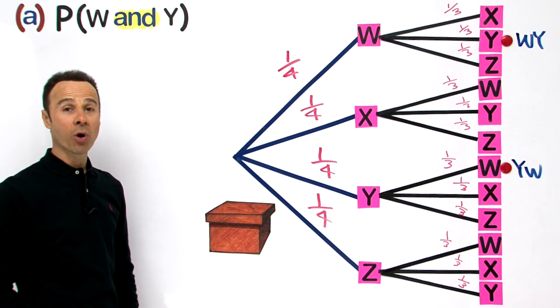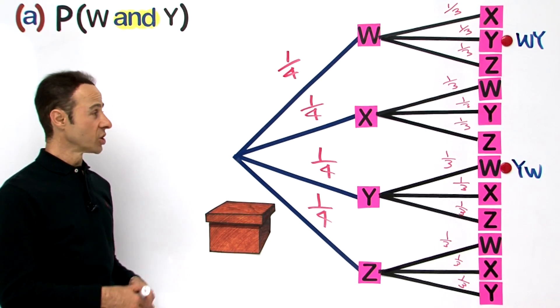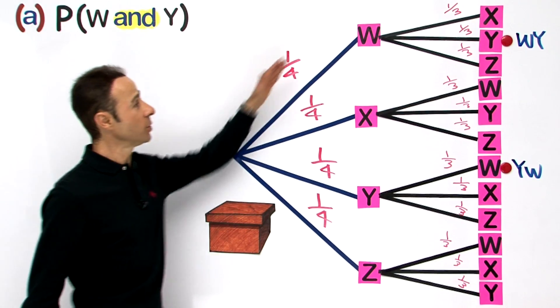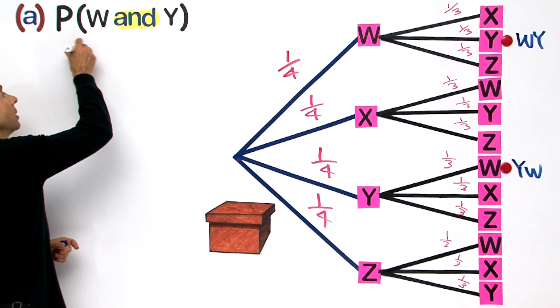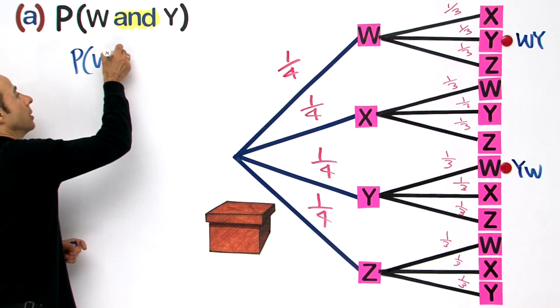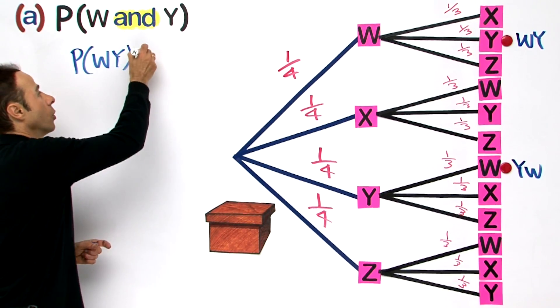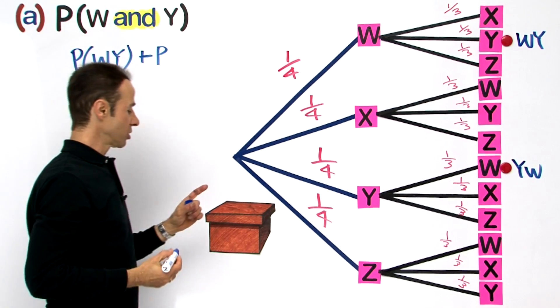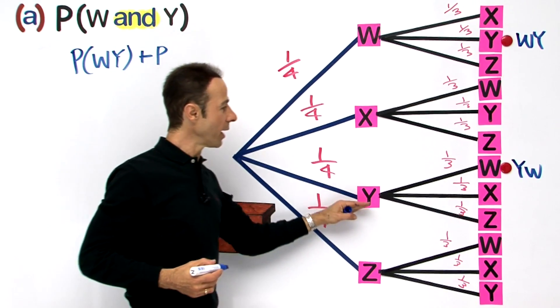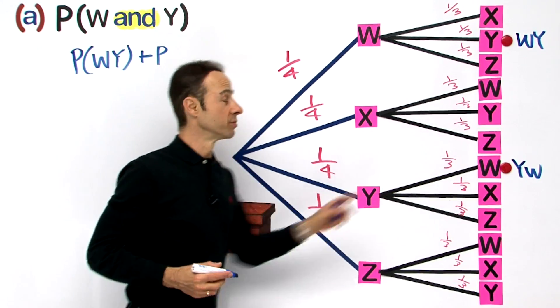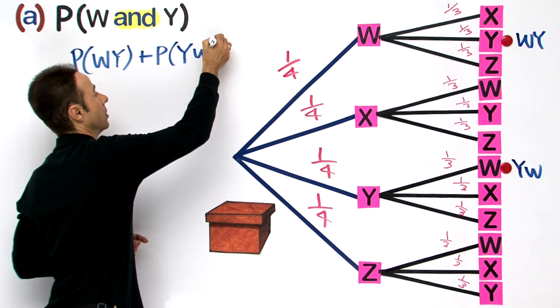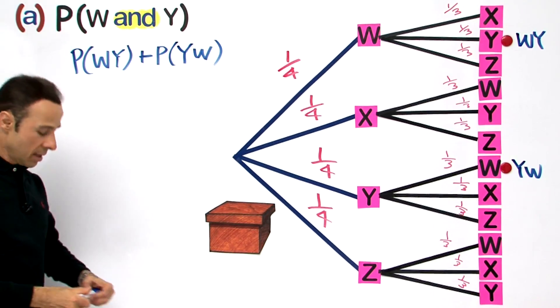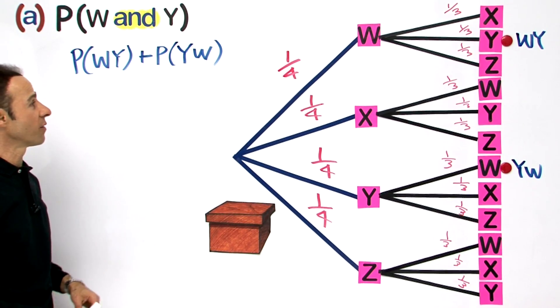So now let us write up that probability equation. We are looking for the probability of W and a Y, so let us write that up first, or the probability this time of a Y followed by a W. That is our equation. Let us work out each one. So what do we have?